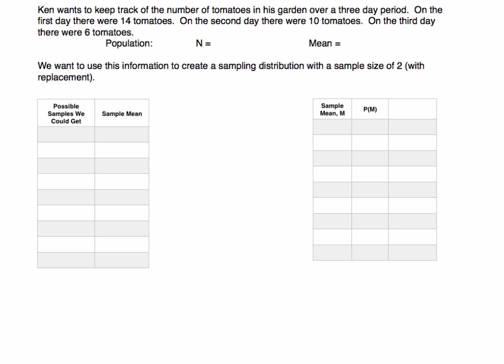Ken wants to keep track of the number of tomatoes in his garden over a three-day period. On the first day there were 14 tomatoes, on the second day there were 10, and on the third day there were six. We are only considering those three days — this is the population. The number of observations, capital N, is three. The grand mean, which is the population mean, is 14 plus 10 plus 6 divided by 3, which equals 10.